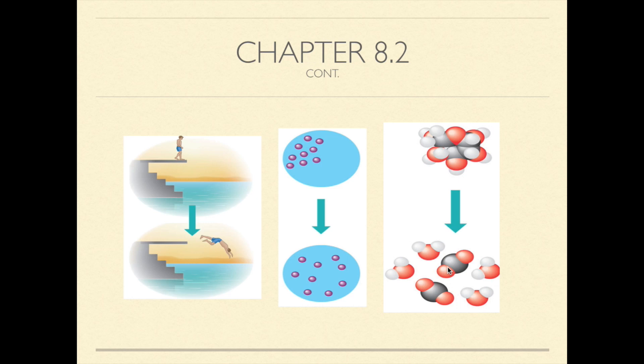When a system reaches a state of maximum stability, it's known as equilibrium. At chemical equilibrium, the system can do no work. A process is spontaneous and can perform work only when it is moving toward equilibrium.